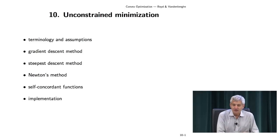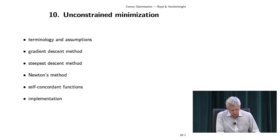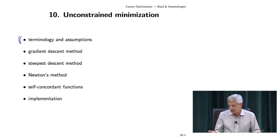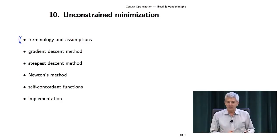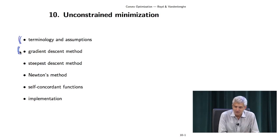Today we're going to look at unconstrained minimization — how do you minimize a smooth convex function. We'll start with some basic ideas and definitions. Most of these problems don't have exact analytical solutions, so we're going to come up with algorithms that only in the limit achieve what you want, but that's good enough for any practical purpose. We'll talk about what is basically the most famous algorithm: the gradient descent method, where you evaluate the gradient and roughly speaking, go downhill.